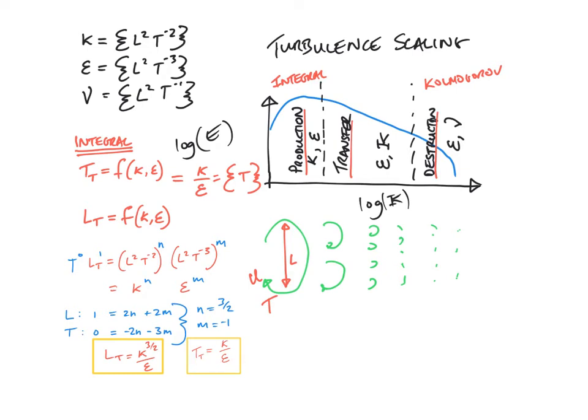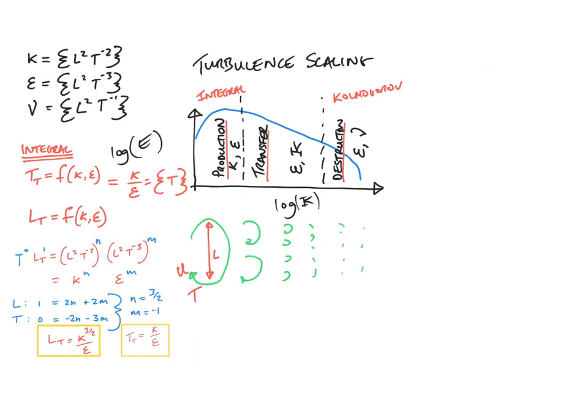Now let's do the same for the Komogorov scales. Noting this time that at the smallest scales of the cascade, the turbulence is a function of the dissipation rate and the viscosity. So we have to use the dimensions of these two quantities instead now. But otherwise the procedure is exactly the same.